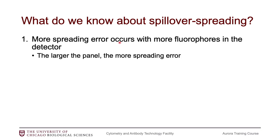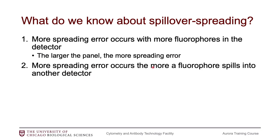The first rule is that more spreading error occurs when you have more fluorophores in the detector — that translates to the larger the panel, the more spreading error potential you have. This is why we need to pay attention to spreading error much more on the Aurora. Most people who have jumped over to the Aurora are looking to do very large panels. If you are looking to just do a 10 or 15 marker panel on the Aurora, you're going to have the same amount of spreading error issues as you would on a Fortessa. But as we increase the size, we have to pay attention to this spreading error. The second rule is that more spreading error occurs the more a fluorophore spills into another detector.